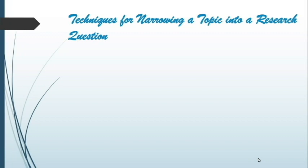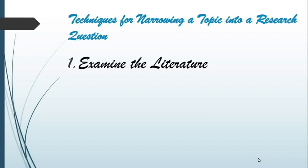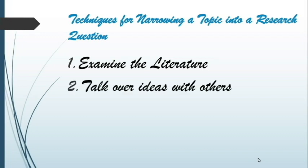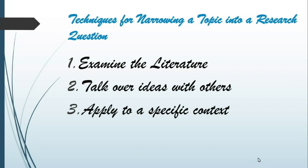Techniques in narrowing a topic into a research question. The first one: examine the literature. Published articles are an excellent source of ideas for research questions — they are usually at an appropriate level of specificity and suggest research topics. The next one: talk over ideas with others. You may ask people who are knowledgeable about the topic for questions they have thought of. The third one: apply to a specific context. You must focus and narrow the topic on a specific society or geographic unit, and consider which subgroups or categories of people are involved and whether there are differences among them.